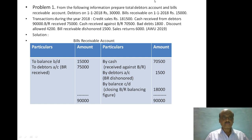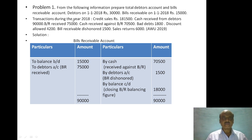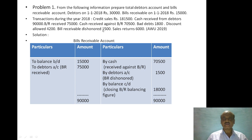On the following information, prepare total debtors account and bills receivable account. Debtors on 1-1-2018: rupees 30,000. Bills receivable on 1-1-2018: rupees 15,000. Transactions during 2018: credit sales rupees 1,81,500; cash received from debtors rupees 90,000; bills receivable received rupees 75,000; cash received against bills receivable rupees 70,500; bad debts rupees 1,800; discount allowed rupees 4,200; bills receivable discount rupees 1,500; sales returns rupees 6,000.